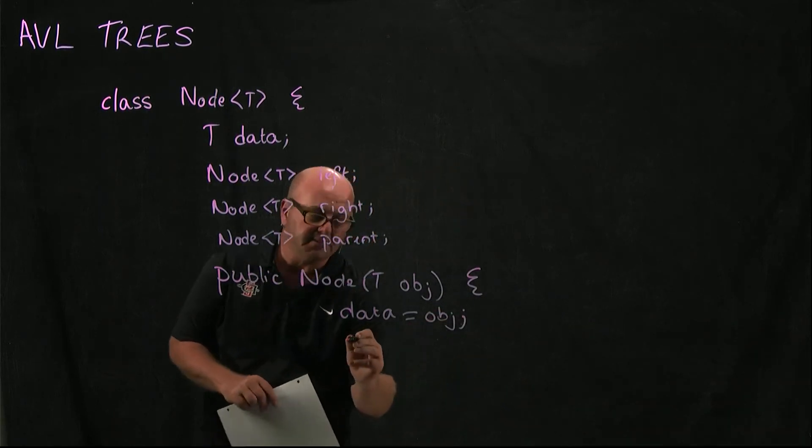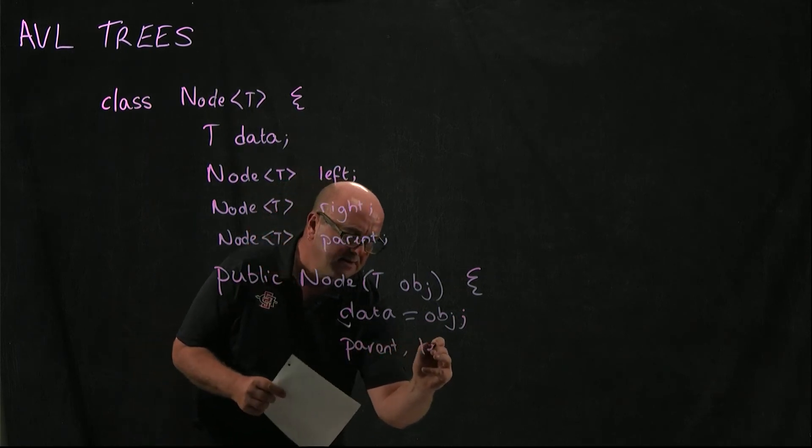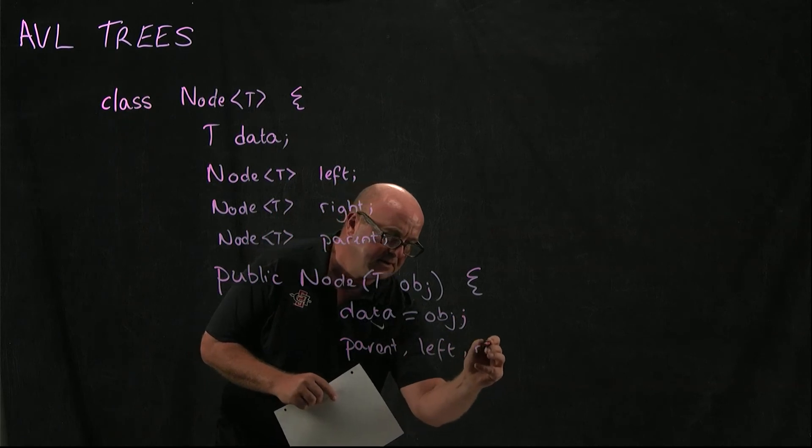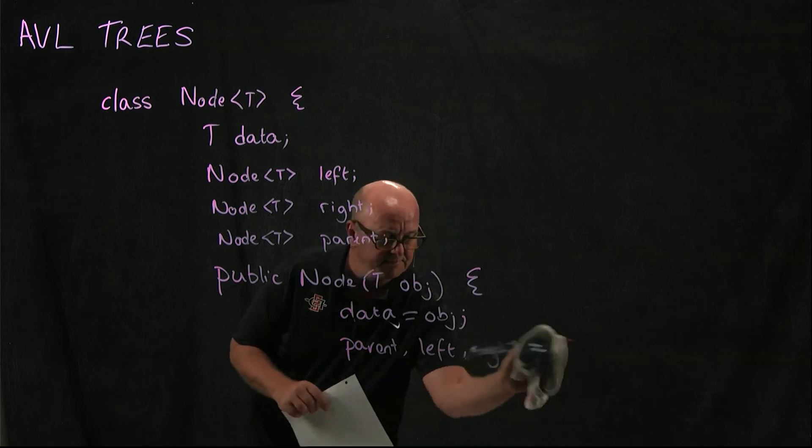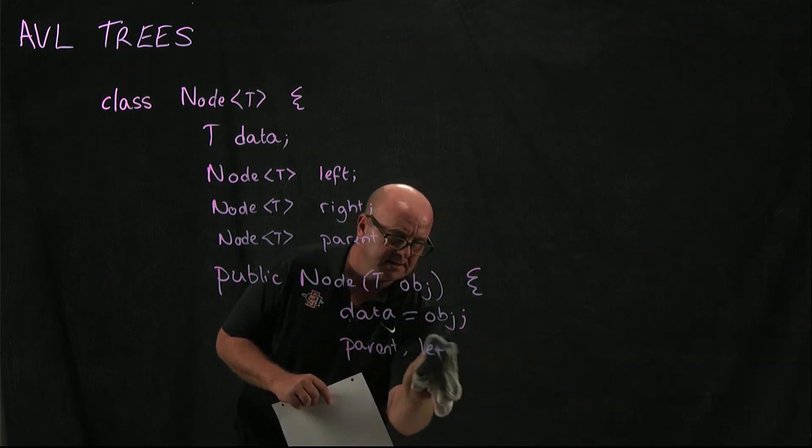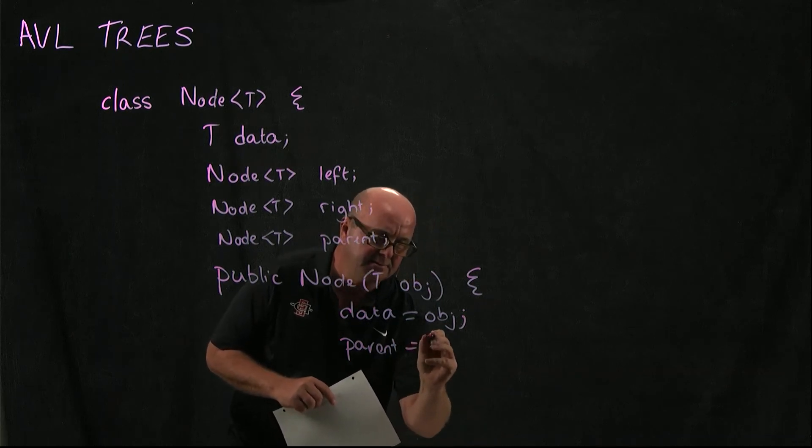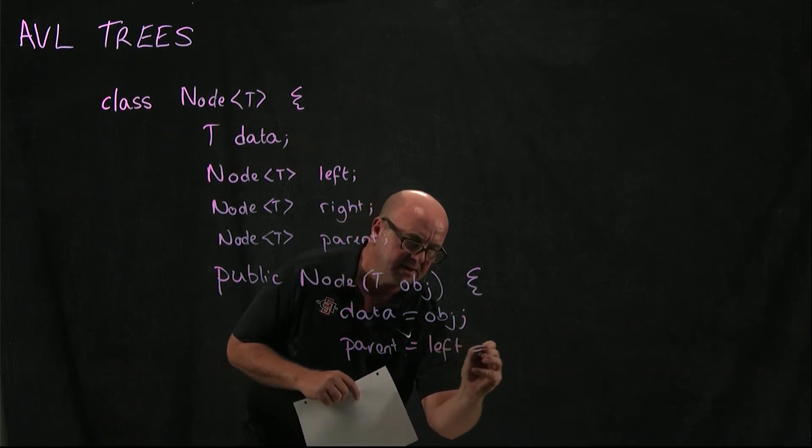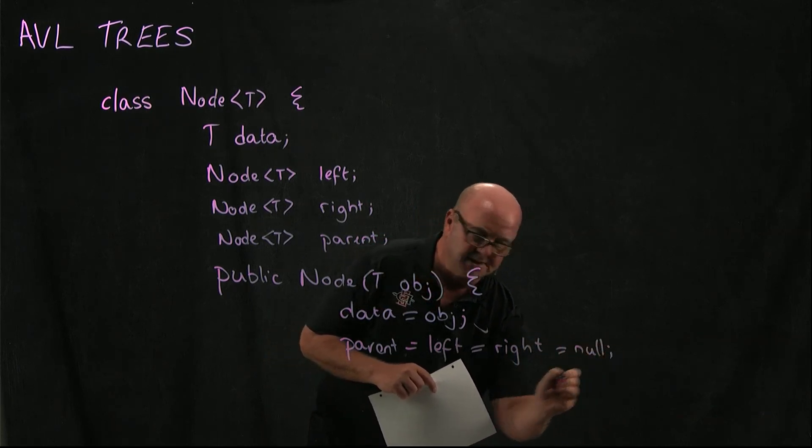And we set parent, left, and right—sorry, do it this way. We set parent equal to left, equal to right, and they're all equal to null.